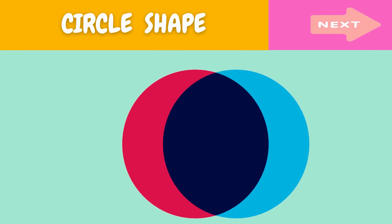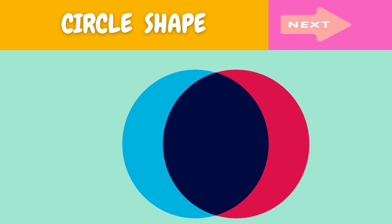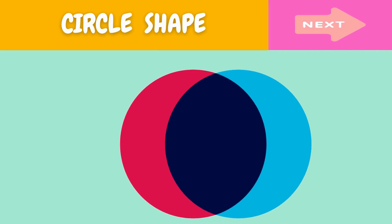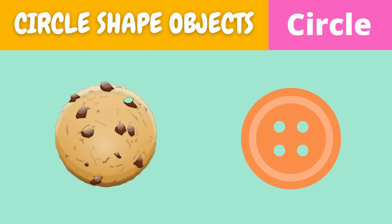This is a circle. What is this? This is a circle. Here are some examples of circle shaped objects.